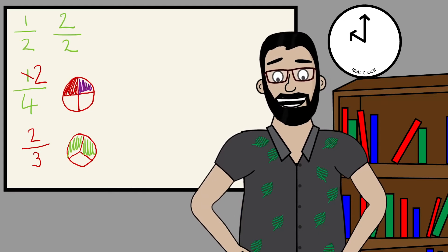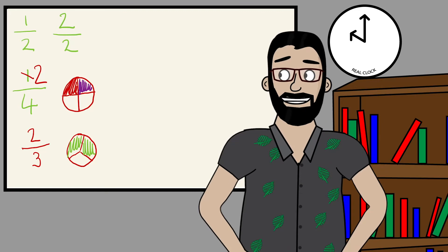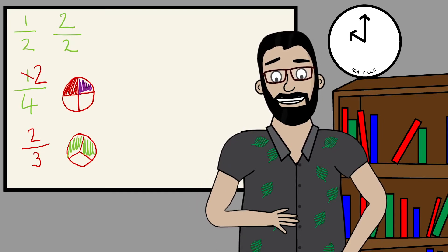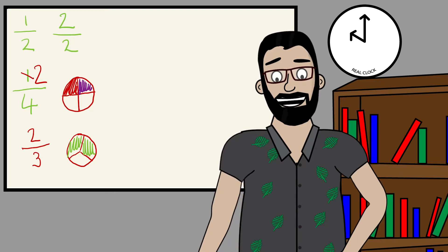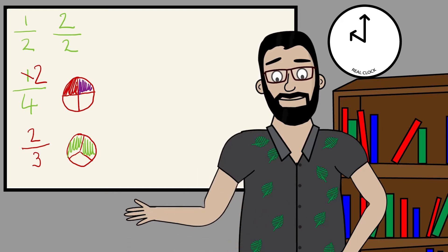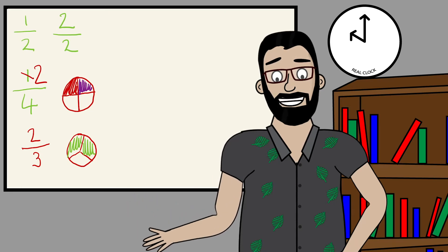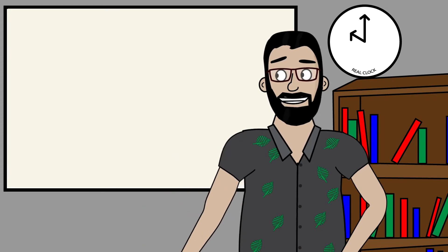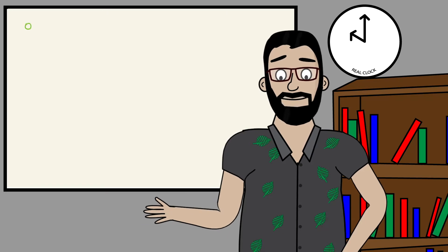It doesn't always have to be circles that we're splitting into parts. It can be rectangles or other objects, or we could also be talking about numbers. So we could actually split our numbers into equal parts. So let me clear that screen there — if we had, say, the number 12...